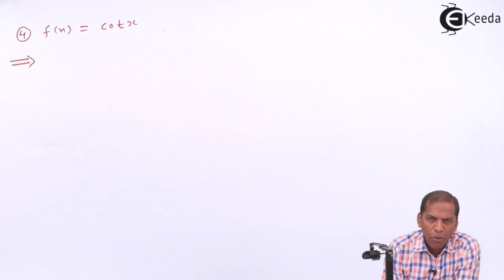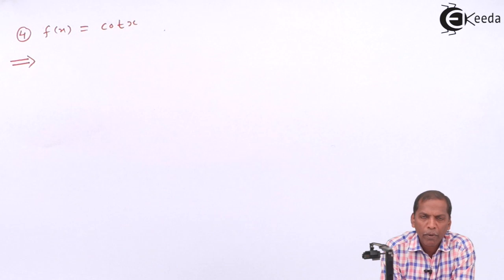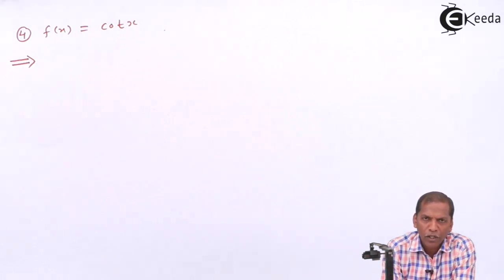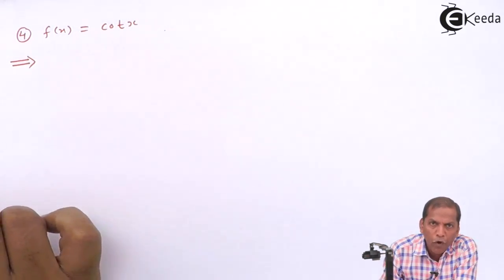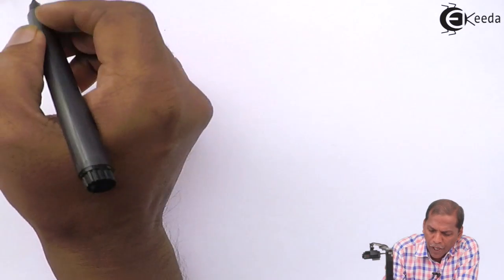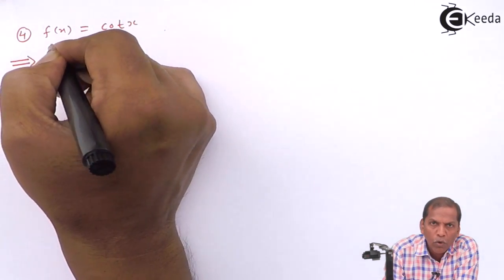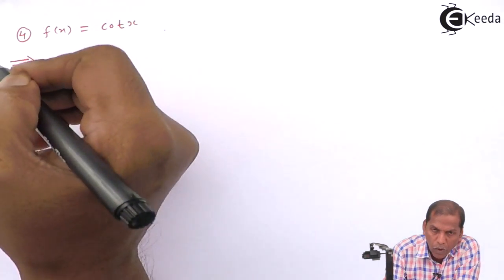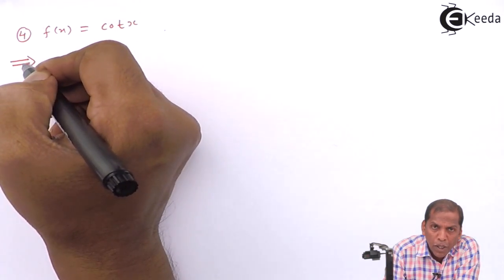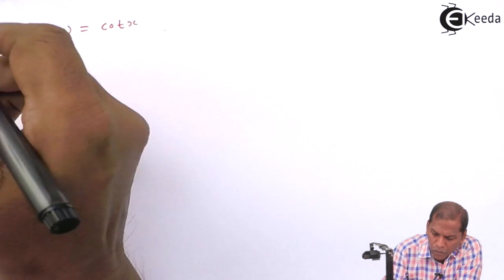Hello friends, now we see the derivative of trigonometric function with proof. Number 4 is f(x) is equal to cot(x). Now see the proof.